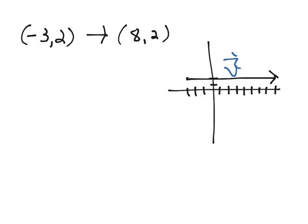To find the component form of a vector, we are going to subtract the x elements and then subtract the y elements.